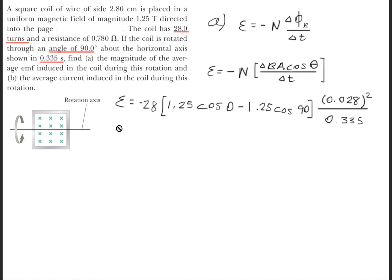was zero degrees. And when we rotate it through an angle of 90 degrees, we get that the angle between the B field and the surface normal now becomes cosine 90.